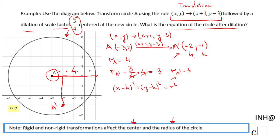h and k are the coordinates of the center, which is A'. So h is -2 and k is -1, and r is the radius of the new circle which is 3. So we're going to plug them in and we're going to get (x - (-2))² + (y - (-1))² = 3².